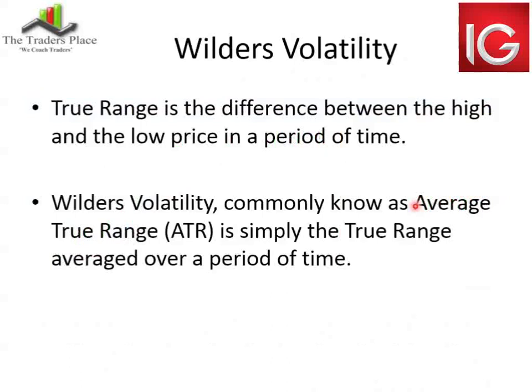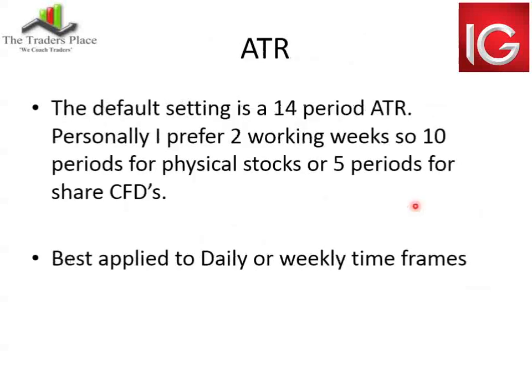Wilder's volatility is based on true range, which is the difference between the high and low price in a period of time. Wilder's volatility is commonly known as average true range, and is simply the true range averaged over a period of time. The moving average setups are simple to look at — you can see where the price is relative to its 15-day or 21-day versus 50-day average. Average true range, on the other hand, requires a little more effort. The default ATR setting is 14 periods.